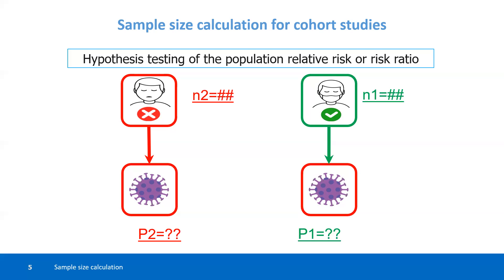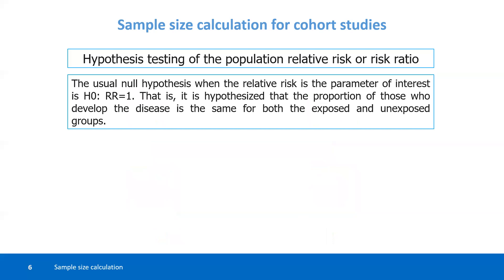Now we have to estimate the sample size from both groups. The usual null hypothesis when relative risk is the parameter of interest is that the risk ratio equals 1. Any ratio estimate — the null value is 1. This means there is no relationship between the two groups; that is, the risk among the exposed is equal to the risk among the unexposed group. The risk ratio equal to 1 means the incidence from one group equals the incidence from the other group — incidence means risk in this example.